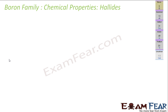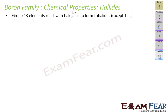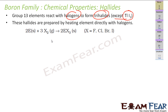Group 13 elements easily react with halogens to form trihalides. The exception is thallium, which does not form these. Other than that, group 13 elements — boron, aluminum, gallium — all form trihalides. These can be easily prepared by heating the group 13 element with a halogen. The halogen can be fluorine, chlorine, bromine, or iodine, and it forms metal halides.